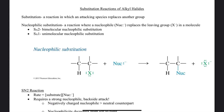Welcome to Part 2 of Chapter 6, Alkyl Halides and Nucleophilic Substitution. Part 1 of Chapter 6 covered the classes, characterization, reactivity, and nomenclature of halides, and even allylic bromination with NBS or N-bromosuccinimide.